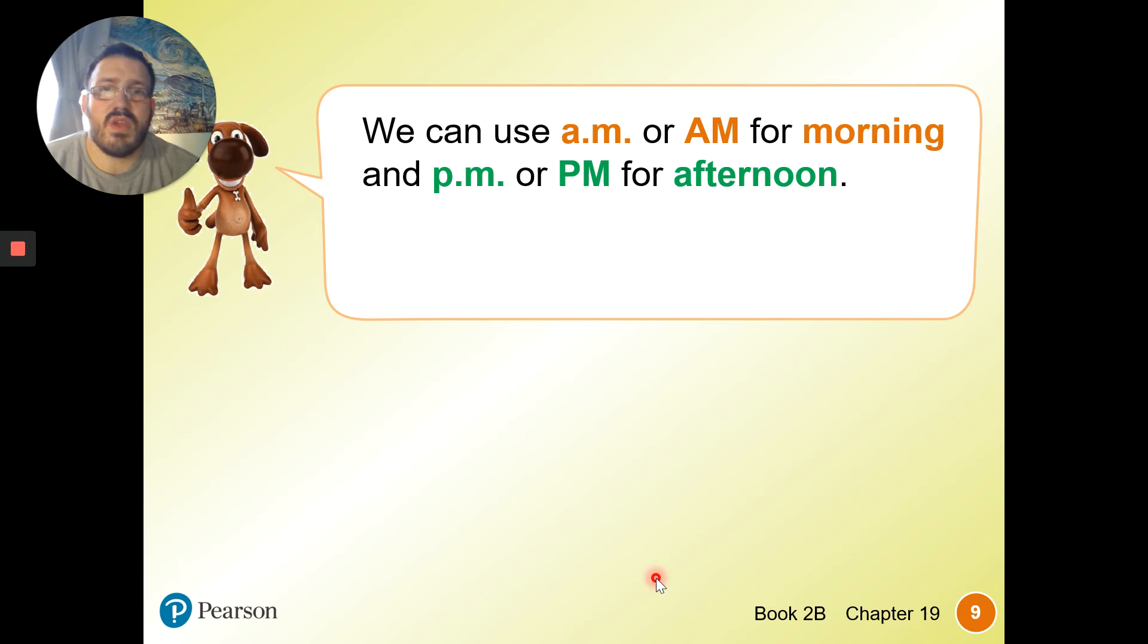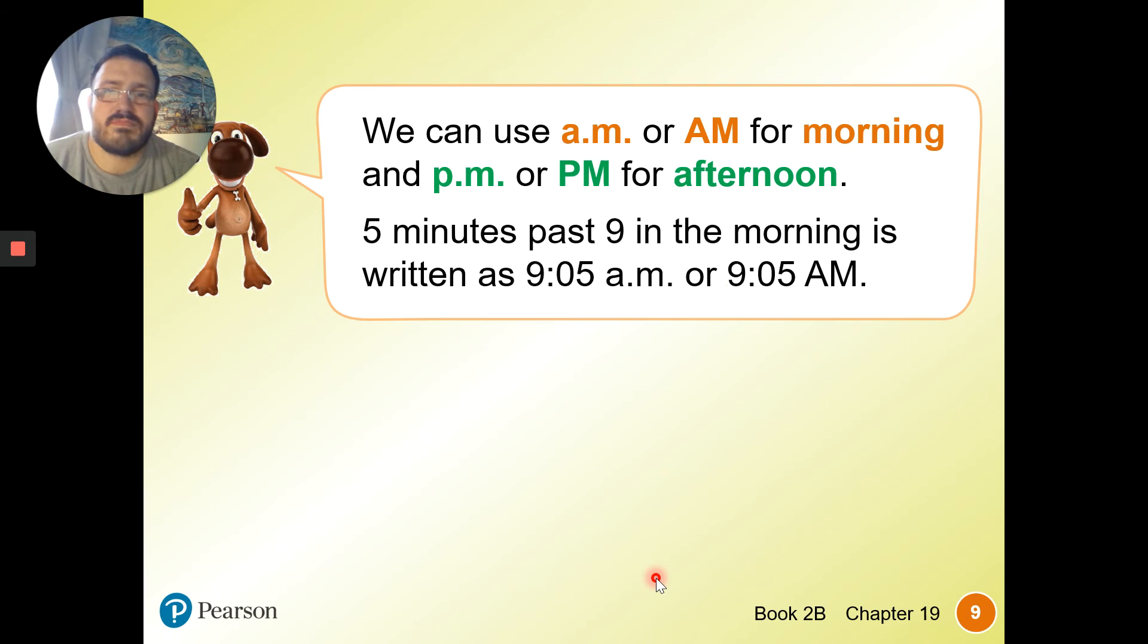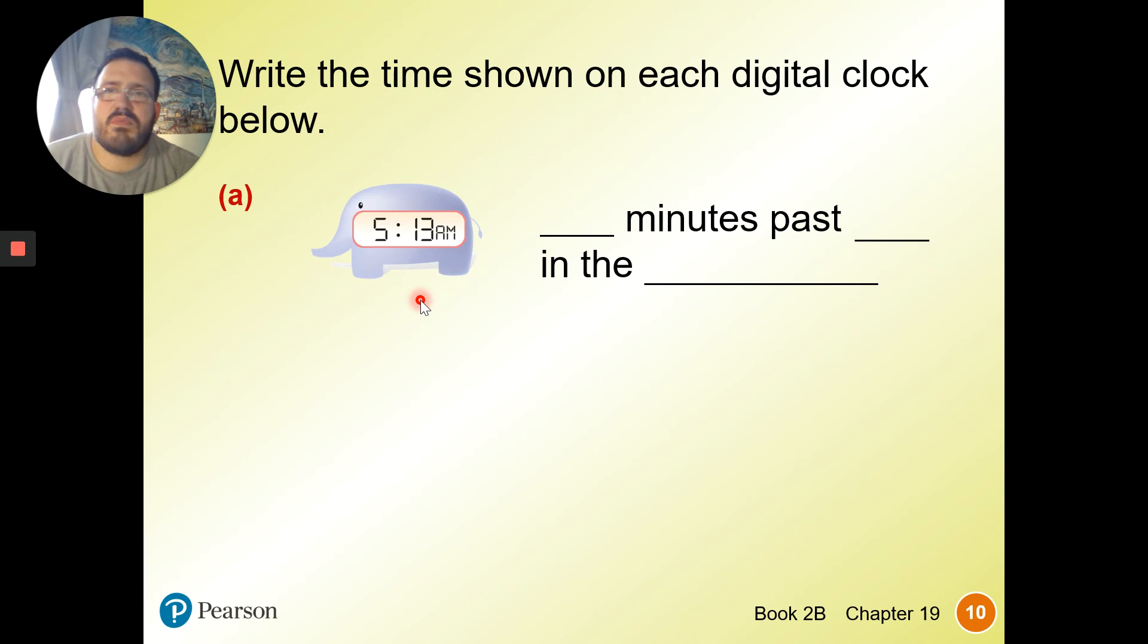As an abbreviation, we use a.m. for morning, and p.m. for afternoon. Five minutes past nine in the morning is written as 9:05 a.m. or 9.05 a.m.